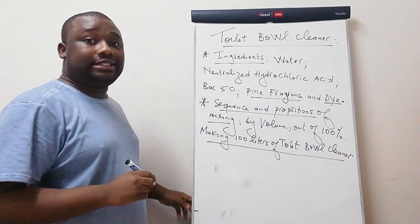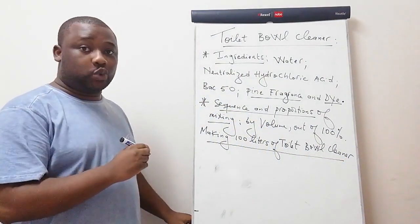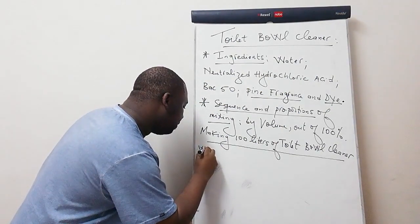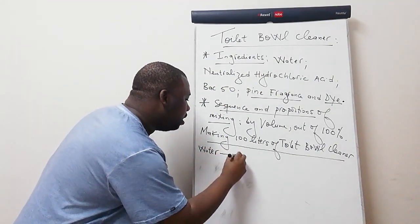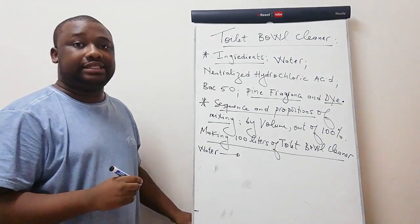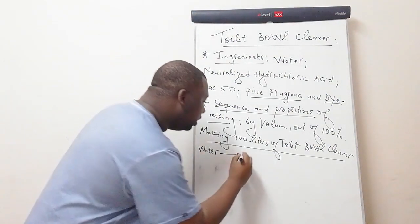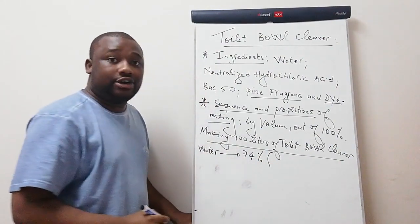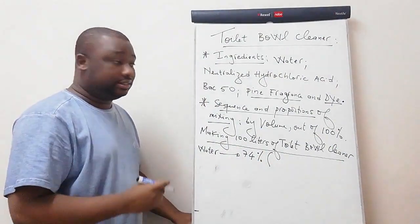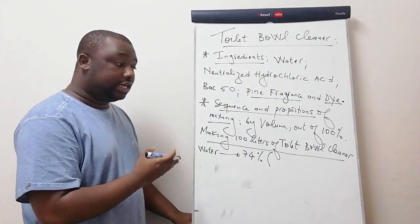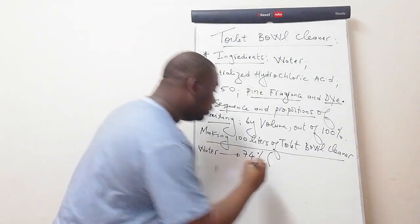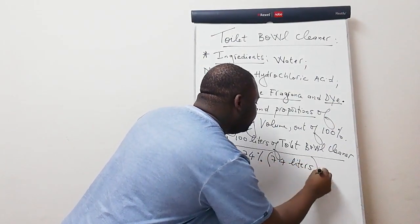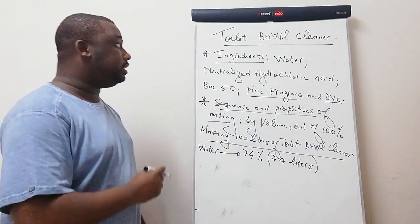The first ingredient is water. Water should be 74% of the total volume. Out of 100 liters, water should be 74 liters.